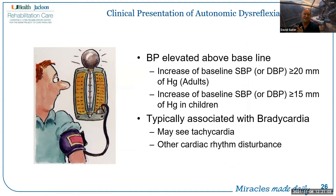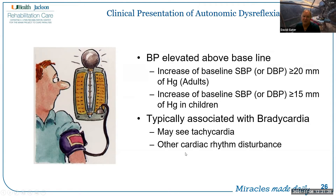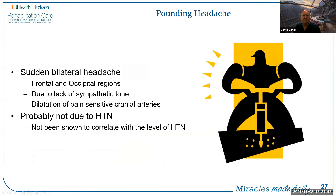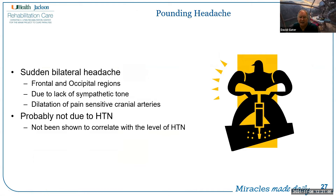The increased blood pressure is sensed by baroreceptors that send information to the medulla, which sends information back to the heart to slow it down — a relative bradycardia — but below the level of the injury the person remains vasoconstricted. Above the level of injury, we see flushing, sweating, and a pounding headache, all associated with autonomic dysreflexia. Autonomic dysreflexia is defined as an increase in baseline systolic blood pressure greater than 20 mmHg for adults or greater than 15 mmHg for children. It is typically associated with bradycardia, though in the initial episode you may see relative tachycardia in response to sympathetic hormones. The headache is typically bilateral in the frontal and occipital regions, felt to be due to dilation of pain-sensitive cranial arteries rather than the high blood pressure itself.